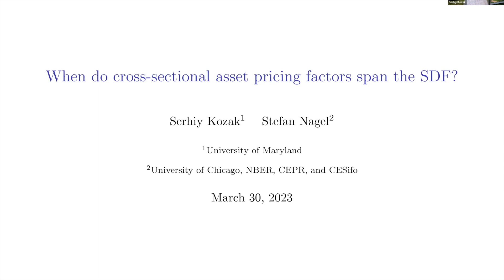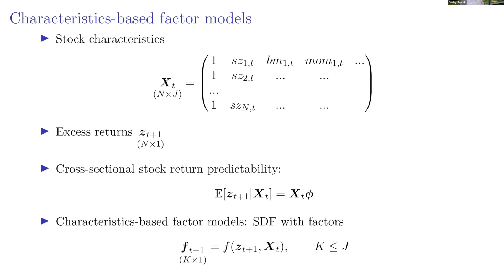Let me start with notation. In cross-sectional asset pricing we work with characteristics. We put them into a matrix X with N rows — N stocks — and J characteristics. The first characteristic is a vector of ones, and then you have things like size, market, momentum, and many more.